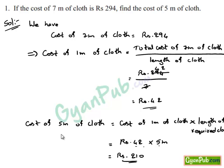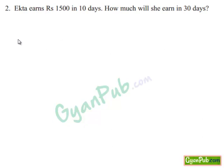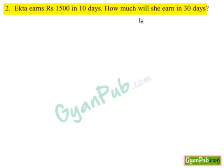Therefore, cost of 5 meters of cloth is Rs. 210. Moving on to the second question: Ekta earns Rs. 1500 in 10 days. How much will she earn in 30 days?